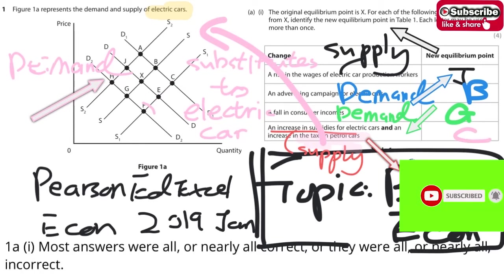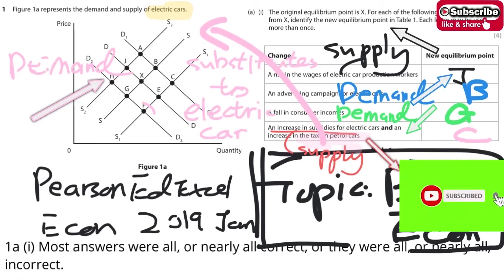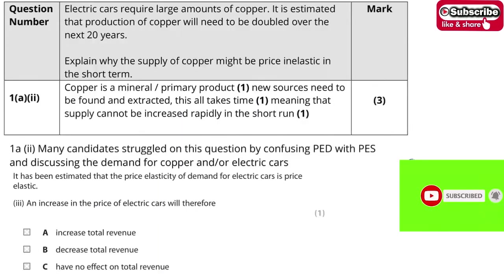In the exam report, it notes that most answers are correct or nearly correct. In this part, I'd like to take a look at A2 first, and then we will jump to A3. A2 talks about what makes the supply of copper price elastic.